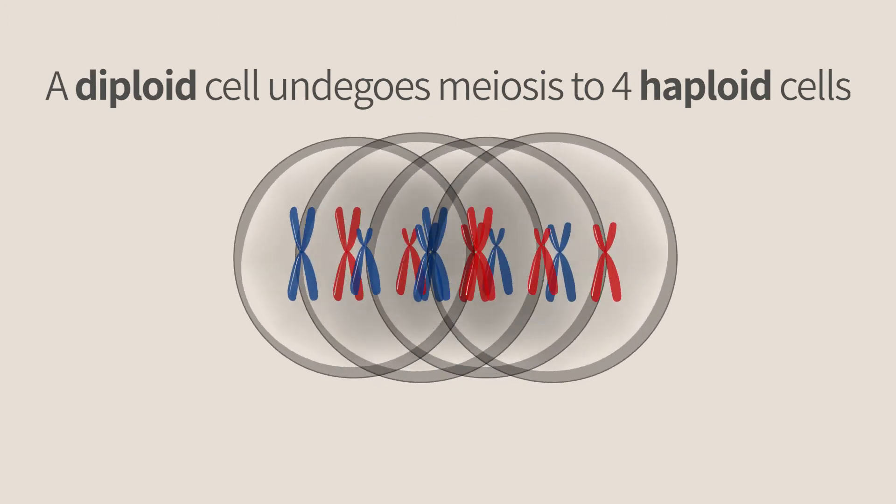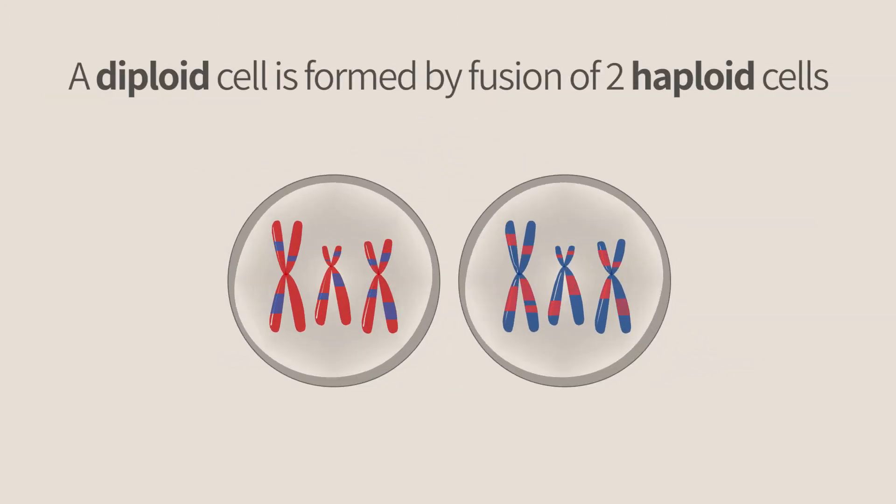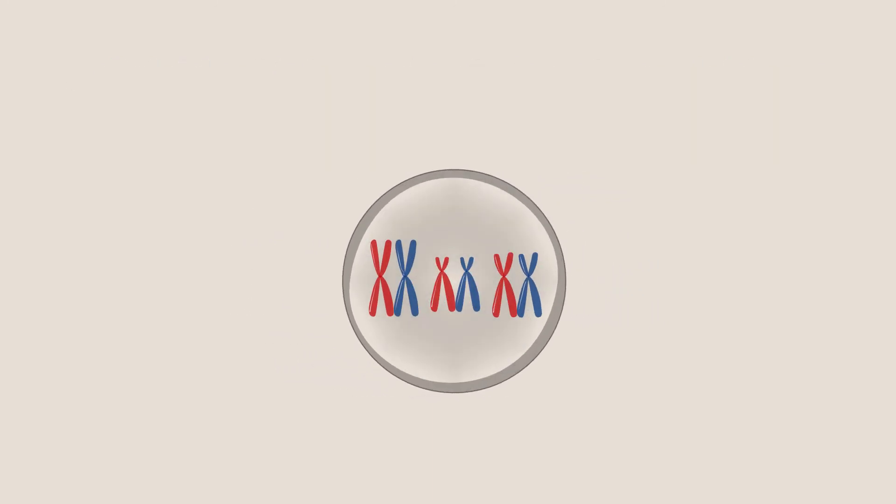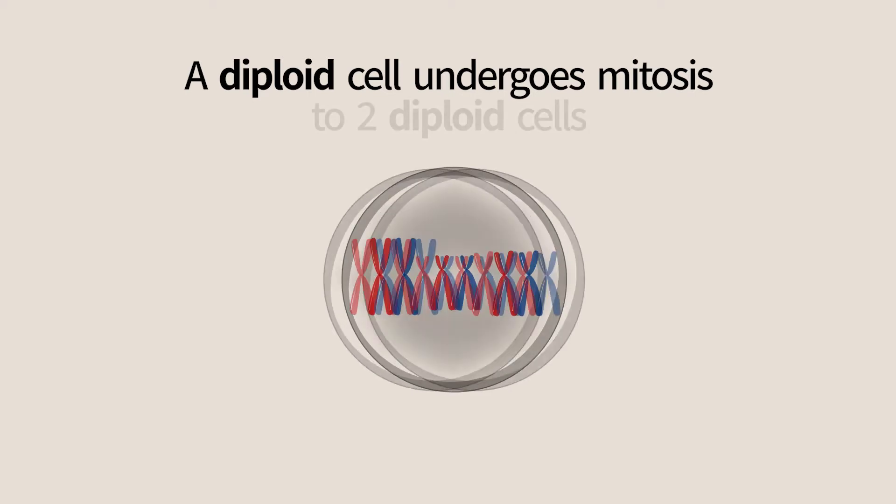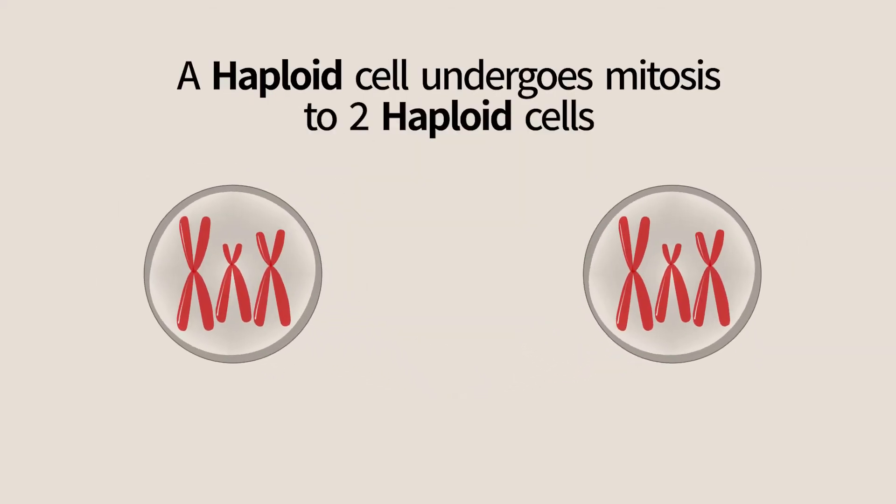Haploid cells are formed by meiosis from a diploid cell. A diploid cell is formed from two haploid cells that fuse in fertilization. Both cell types can also form by mitotic division that conserves the haploidy. A diploid cell that undergoes mitosis gives rise to two diploid cells and a haploid cell gives rise to two haploid cells.